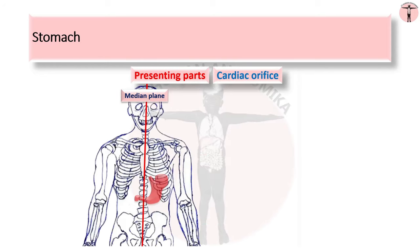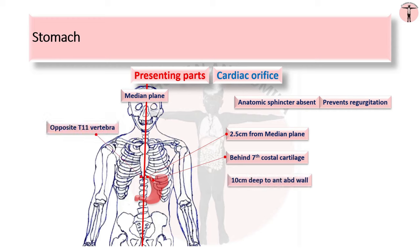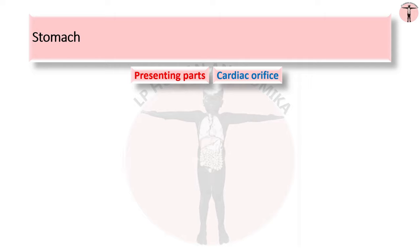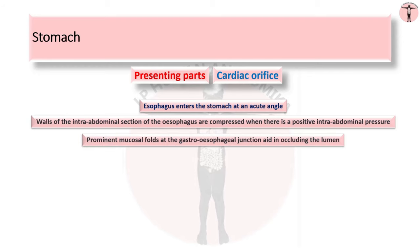The cardiac orifice is where the esophagus enters the stomach. No anatomical sphincter can be demonstrated here, but a physiological mechanism prevents regurgitation. It is situated about 2.5 cm to the left of the median plane, behind the 7th costal cartilage, opposite the 11th thoracic vertebra, 10 cm deep to the anterior abdominal wall, and 40 cm from the incisor teeth. The physiological sphincter is maintained by four factors: the esophagus enters at an acute angle; intra-abdominal pressure compresses the esophageal walls; prominent mucosal folds occlude the lumen at the gastroesophageal junction; and the right crus of the diaphragm has a pinchcock effect.